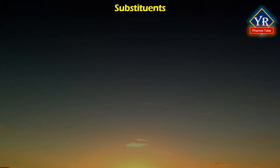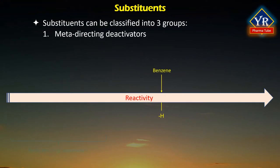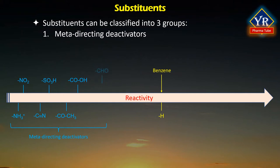Substituents that are possible to be present on a benzene ring can be classified into three groups. Number 1: meta-directing deactivators such as amino, nitro, sulfonic acid, cyano, acetyl, carboxylate, aldehyde, and ester groups.